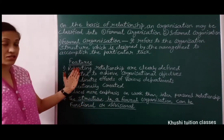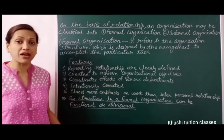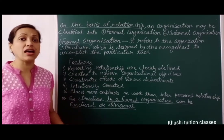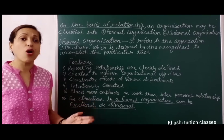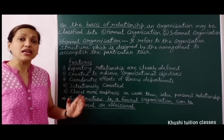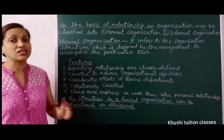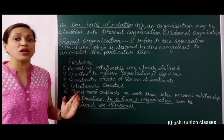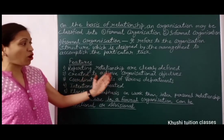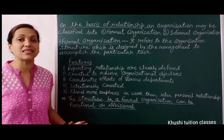Now we see features. The first feature is that reporting relationships are clearly defined. The second is that formal organization is created to achieve organizational objectives — top management decides these goals.